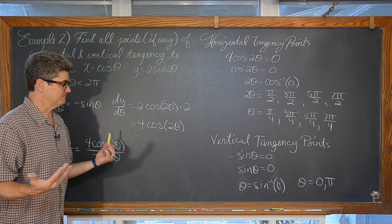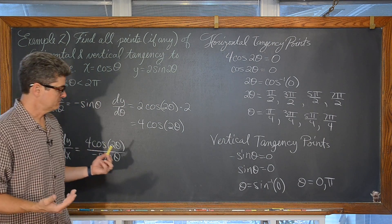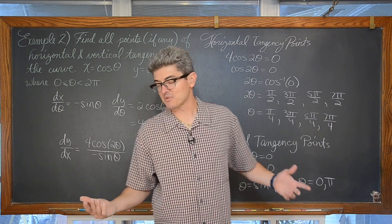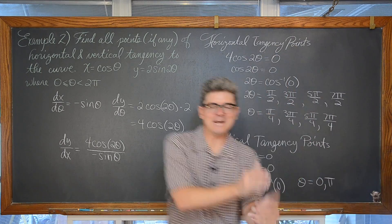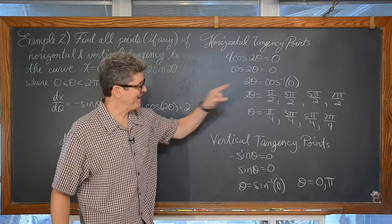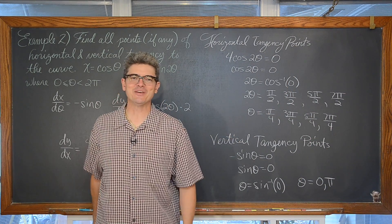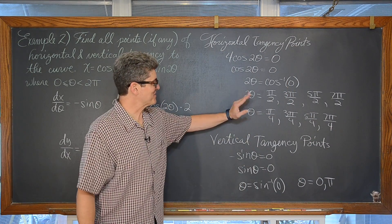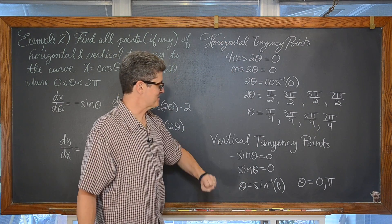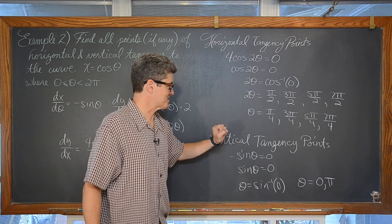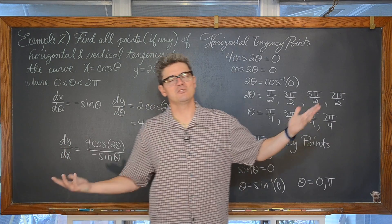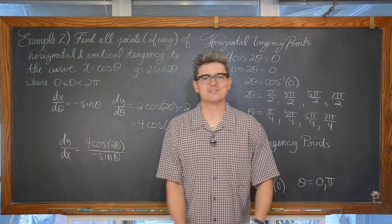That is pretty much it. I am going to reveal those four points of tangency for the horizontal and the two points of tangency for vertical tangent lines, just so that you have those solutions.